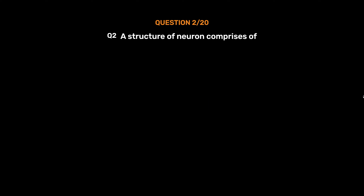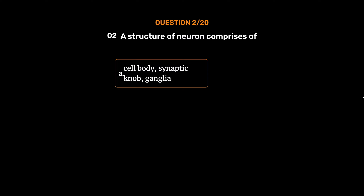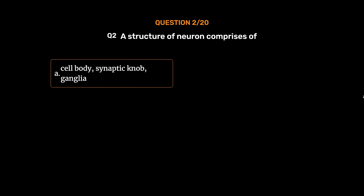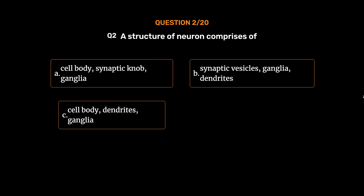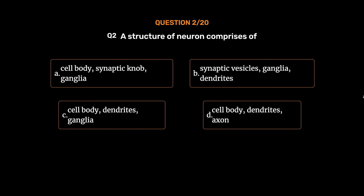Question number 2. A structure of neuron comprises of: Option A: Cell body, synaptic knob, ganglia. Option B: Synaptic vesicles, ganglia, dendrites. Option C: Cell body, dendrites, ganglia. Option D: Cell body, dendrites, axon. The correct answer is Option D: Cell body, dendrites, axon.